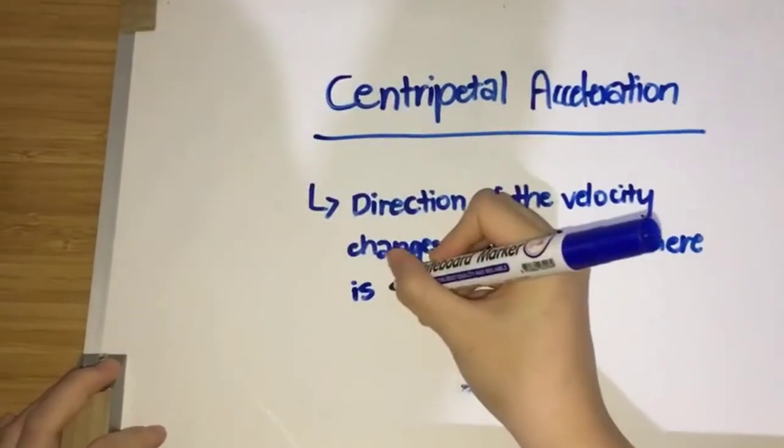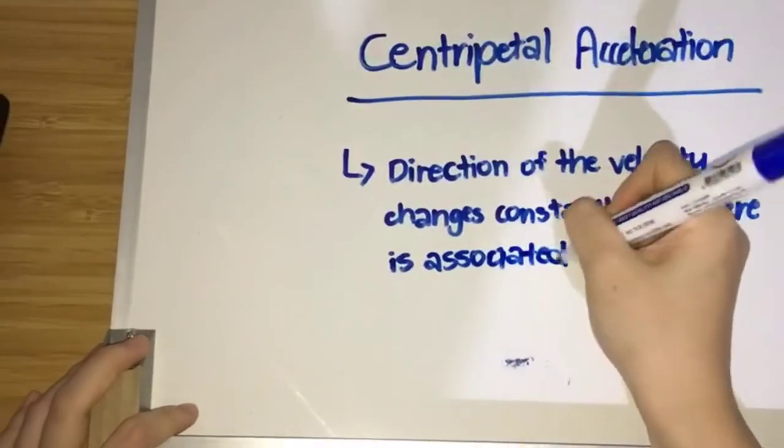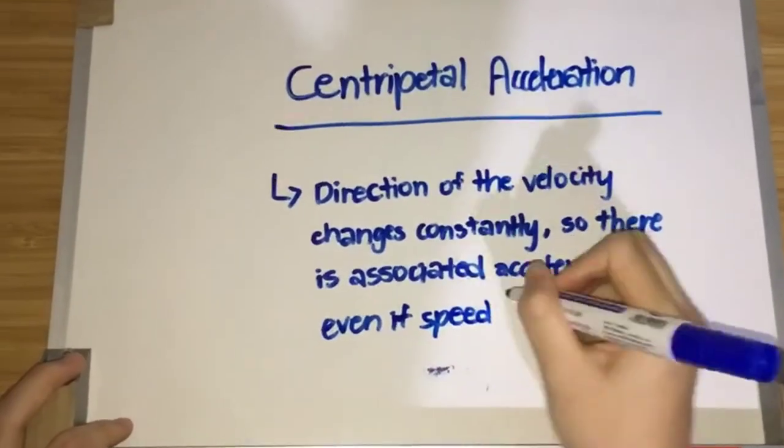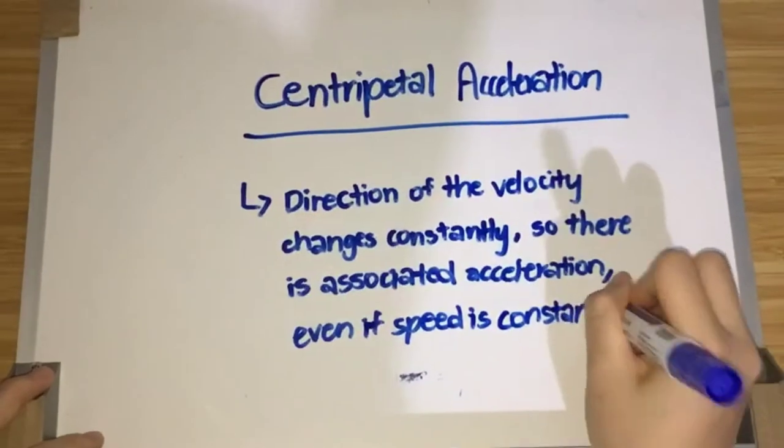In uniform circular motion, the direction of the velocity changes constantly, so there is always an associated acceleration, even though the speed might be constant.